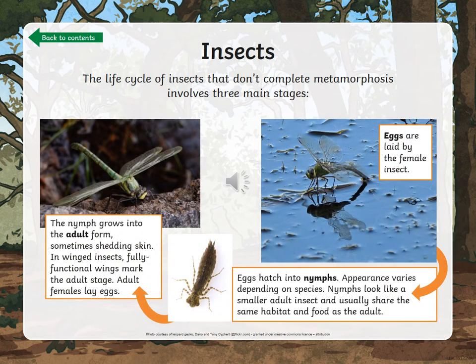Incomplete metamorphosis involves three stages. Eggs are laid by the female insect, but then they hatch into nymphs. They often look like a smaller adult insect, and then the nymph grows into an adult form — sometimes shedding skin. Fully functional wings, for example, show that an insect is at its adult stage. And then those adults lay eggs.